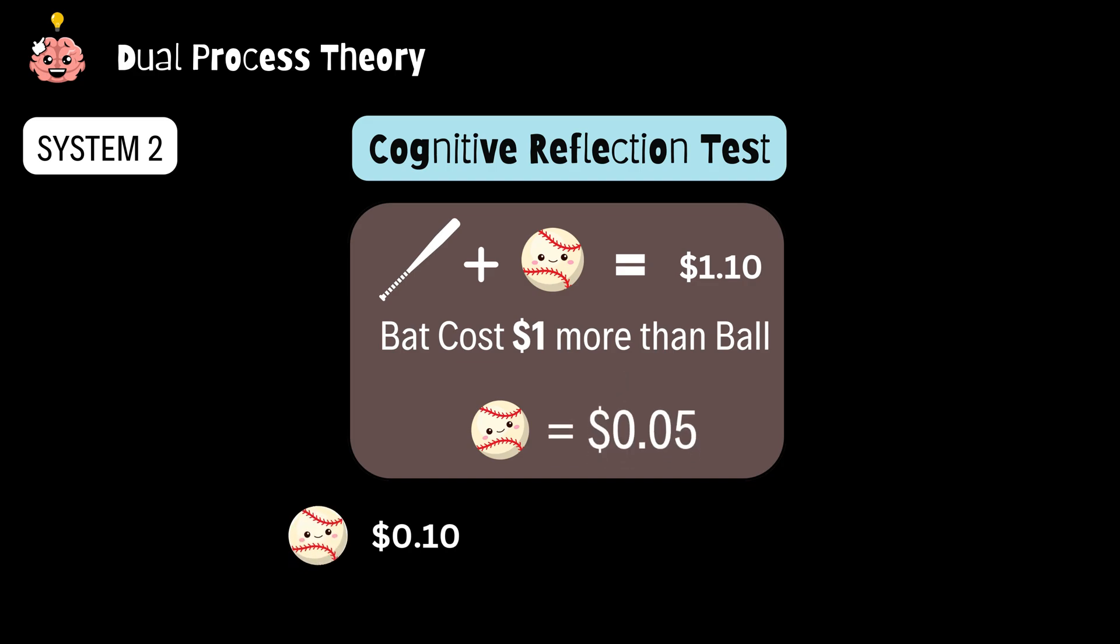If you slow down and think it through, you'll get it. That's system two stepping in to double check system one's overconfident mistakes. But here's where it gets interesting. We don't like using system two much. Why? Because it's exhausting.